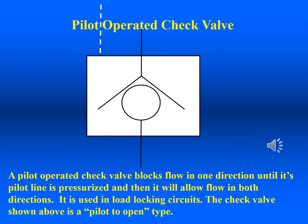There is an application requiring a momentary blockage of flow in order to hold an actuator that is under load or one that requires exact positioning. In this use, the check valve is capable of blocking and also capable of being held open. This kind of check valve is pilot operated. There are two types: pilot to open and pilot to close.